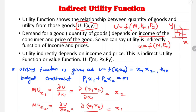So utility depends indirectly on consumer income and prices. We can write utility as a function of money income and the price of goods. This is called the indirect utility function. It is also known as the value function.